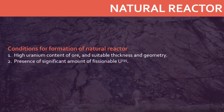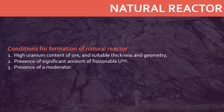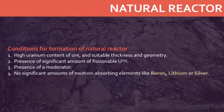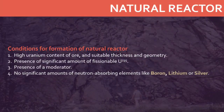Secondly, the uranium ore must contain a significant amount of fissionable uranium-235. Thirdly, there must be a moderator — something that can slow down the neutrons produced when uranium fissions. And lastly, there must not be significant amounts of neutron-absorbing elements such as silver or boron, also called neutron poisons, which would inhibit a self-sustaining nuclear reaction in the vicinity of uranium.